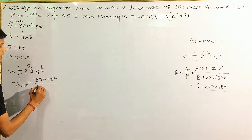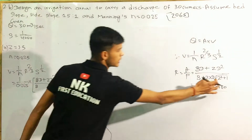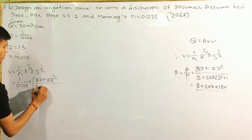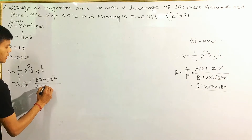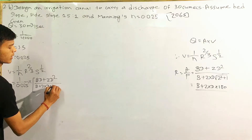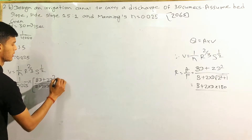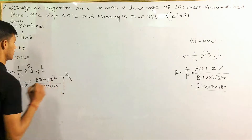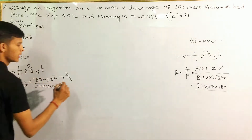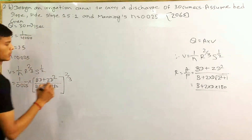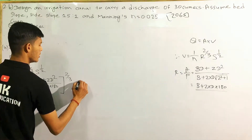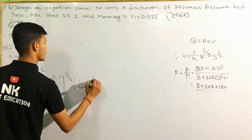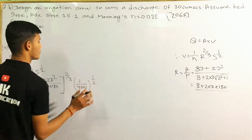Substituting the values: z is equal to 1.5, and D is equal to 1.80, and the exponent is 2/3. We can see the side slope 1 by 4, and then z equals 1/4.